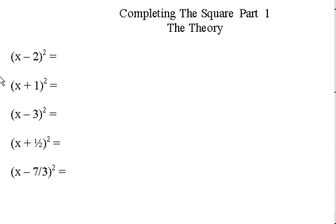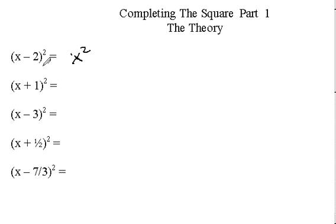We're going to take a few binomials and square them to see what we get, then examine them. x minus two squared: the first term is x squared, we multiply negative two times x and double it to get negative four x, and we square the last term to get plus four.